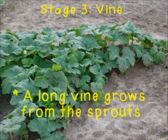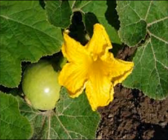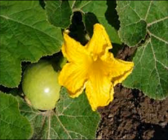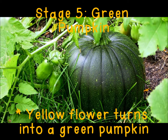In the third stage, a long vine grows from the sprout. This is to give the pumpkin enough space to grow. Yellow flowers start to grow on the vine in the fourth stage of the pumpkin life cycle. In the fifth stage, a yellow flower turns into a green pumpkin.